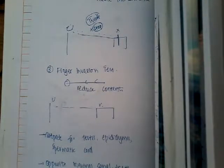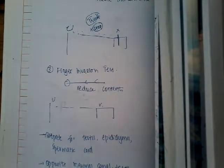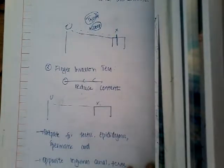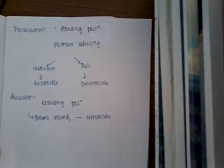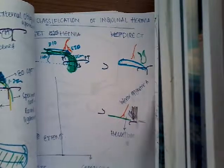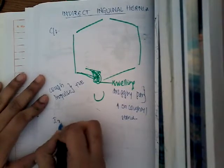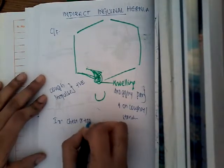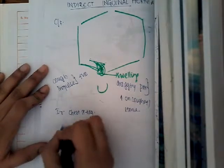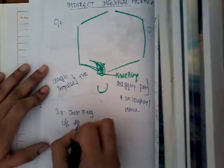We can also do a head rise or leg rise test to assess the tone of the abdominal muscles. For investigations, we do a chest X-ray to rule out bronchitis or pulmonary tuberculosis, and we do an ultrasound abdomen.